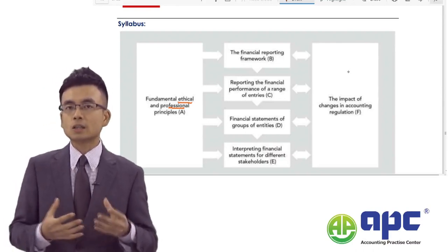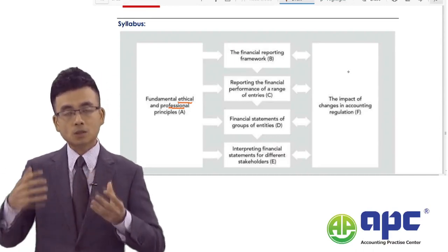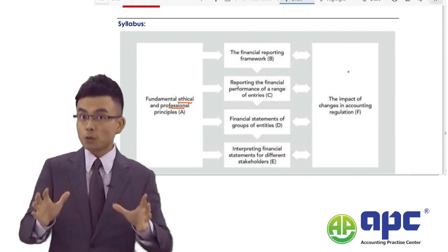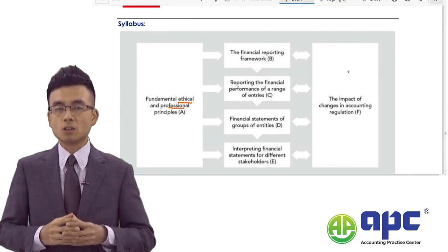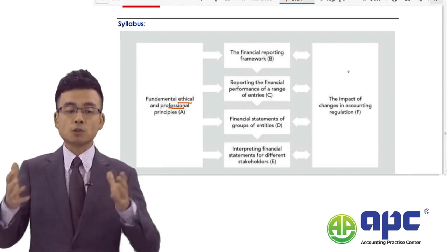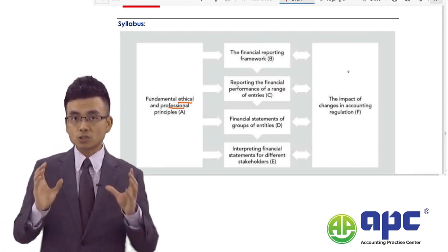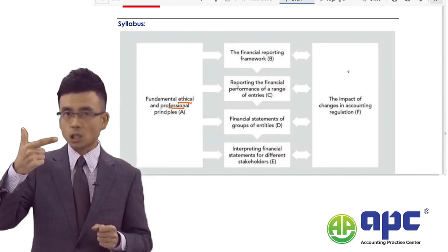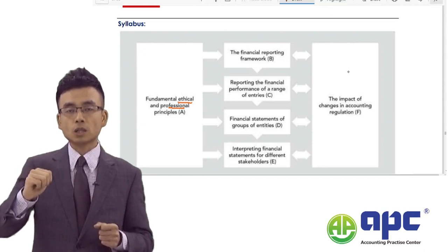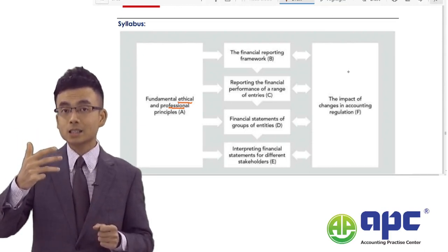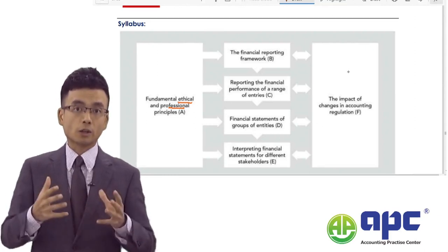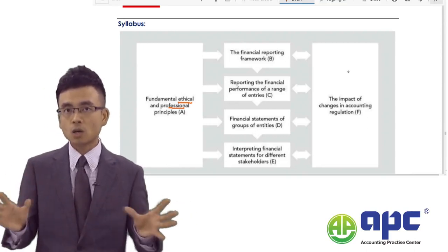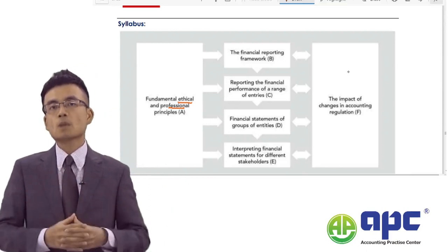When deciding how to account for transactions and when to publish information — including whether to selectively inform investors in advance of buying or selling shares — it really depends on whether we are ethical. We need to stick to ethical principles, including: professional behaviour (following the law); integrity (don't lie); competence and due care (do accounting correctly); confidentiality (don't share confidential information with third parties unless permitted by the business); and objectivity (don't allow conflicts of interest to distort decisions).